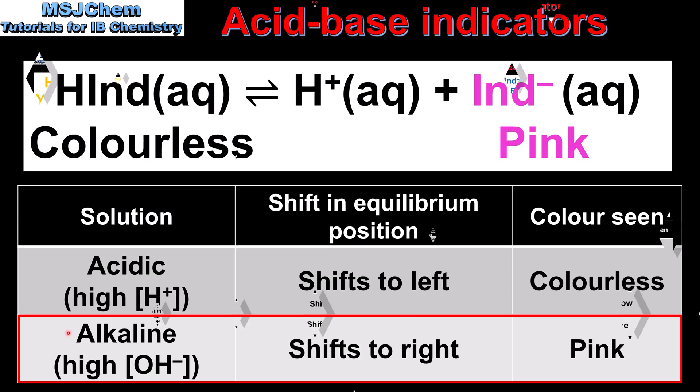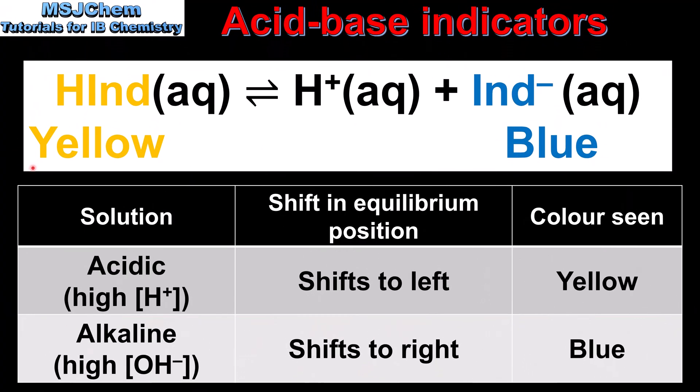The next example we look at is Bromophenol Blue, which is yellow in an acidic solution and blue in an alkaline solution. In an acidic solution, which has a high concentration of hydrogen ions, the equilibrium position shifts to the left, in the direction of the unionized form of the weak acid, and the color seen is yellow. In an alkaline solution, which has a high concentration of hydroxide ions, the equilibrium position will shift to the right, in the direction of the conjugate base, and the blue color is seen.